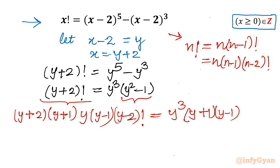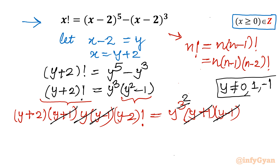Now I can cancel terms from both sides: y with y cubed (leaving y squared), y minus 1 with y minus 1, and y plus 1 with y plus 1 — but only if y is not equal to 0, 1, or minus 1. Checking: if y equals 0, we get 2 factorial equal to 0, which is false. If y equals 1, we get 3 factorial equal to 0, false. If y equals minus 1, we get 1 factorial equal to 0, also false. So the cancellation is valid.